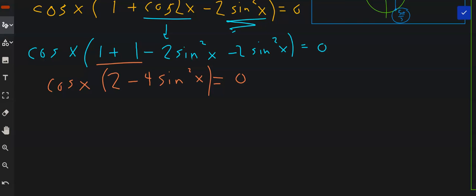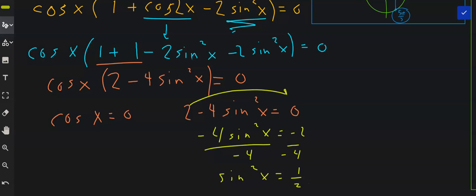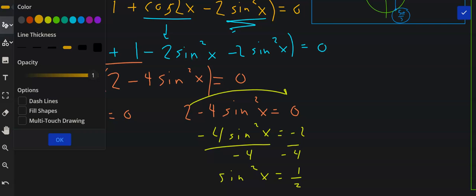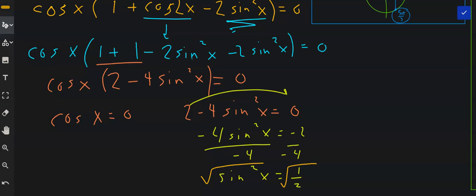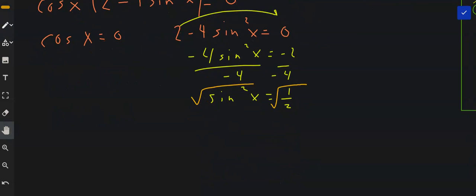And we can set the two factors equal to 0. Cosine x equals 0. And 2 minus 4 sine squared x equals 0. If we subtract the 2 to the other side, negative 4 sine squared x equals negative 2. Divide by negative 4 on both sides. We get sine squared x equals 1 half. Take the square root of both sides.